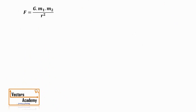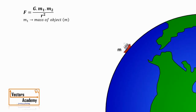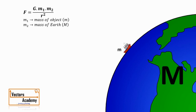According to the universal law of gravitation, the gravitational force F is equal to G into m1 into m2 upon r squared, where m1 and m2 are the masses of two objects. If we consider a mass on the surface of the earth with mass small m, and the mass of the earth as capital M, then the formula becomes F equal to G into capital M into small m upon r squared.